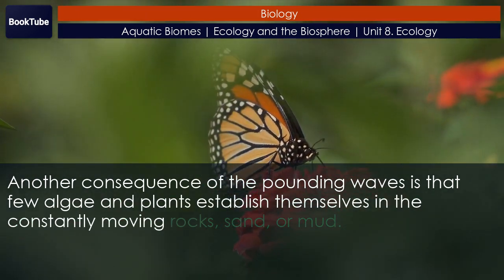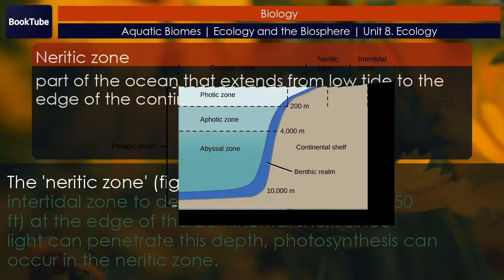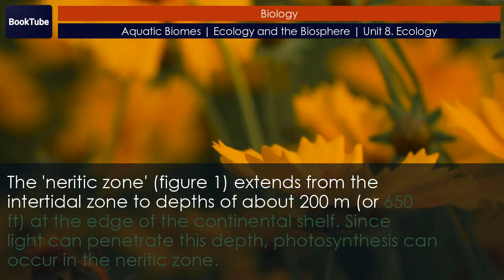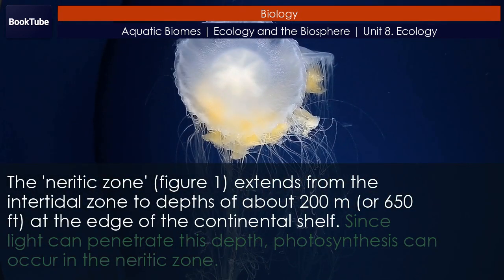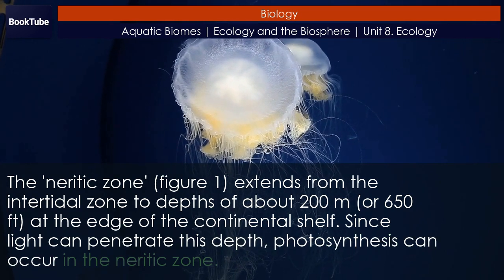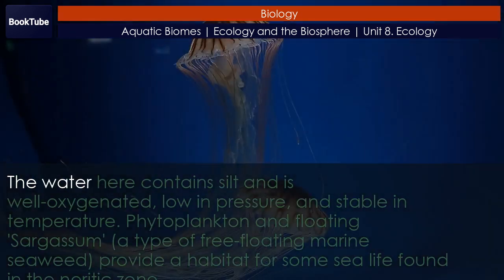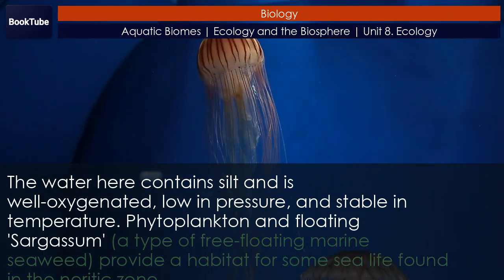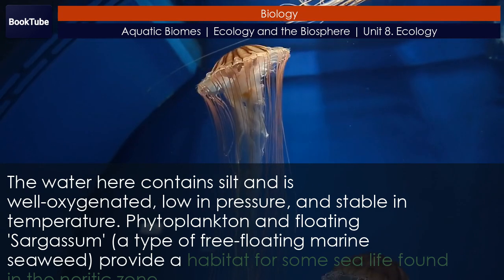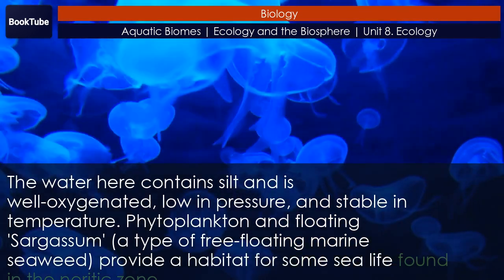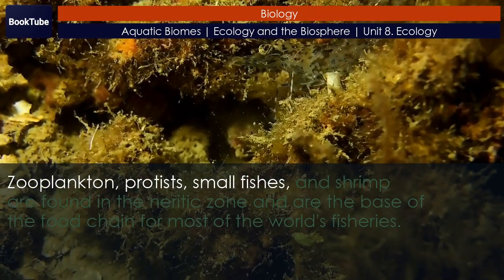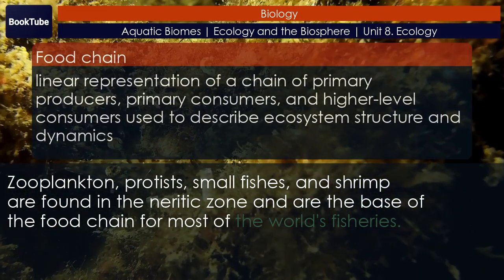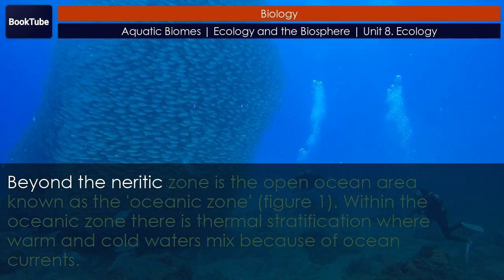The neritic zone extends from the intertidal zone to depths of about 200 meters or 650 feet at the edge of the continental shelf. Since light can penetrate this depth, photosynthesis can occur in the neritic zone. The water here contains silt and is well oxygenated, low in pressure, and stable in temperature. Phytoplankton and floating Sargassum — a type of free-floating marine seaweed — provide habitat for some sea life. Zooplankton, protists, small fishes, and shrimp are found in the neritic zone and are the base of the food chain for most of the world's fisheries.